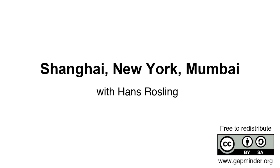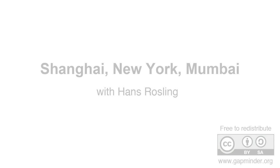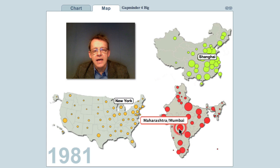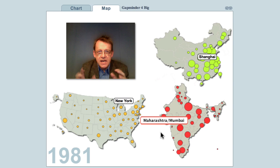Shanghai, New York, Mumbai. A Gapminder video with Hans Rosling. Shanghai, New York, and Mumbai in Maharashtra. They are great cities — big ports and centers of trade in the three big nations.